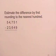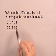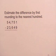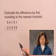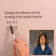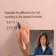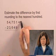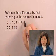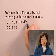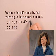In this exercise, we'll estimate a difference by rounding. We estimate the difference of these two numbers by first rounding to the nearest 100. This means we're to round 54,751 to the nearest 100. Doing that, we get 54,800.